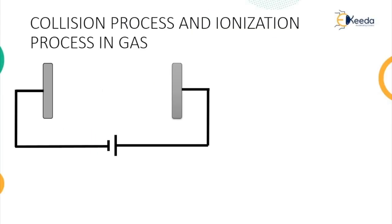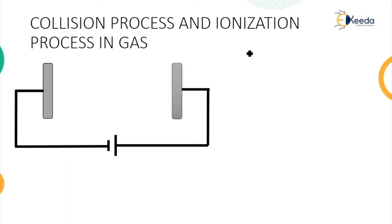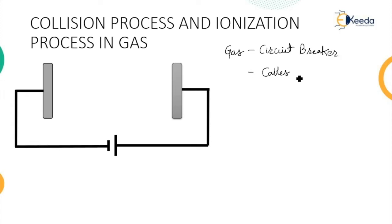Now let us start with the first understanding of the gas. What is gas? What is collision and what is ionization? Basically, gas is an insulating material. This gas can be used in different electrical applications like circuit breakers and cables, and the purpose of that is to act as an insulation.